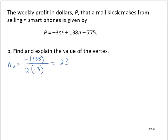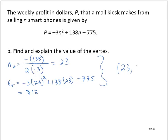Now finding the P coordinate of the vertex by substituting 23 into the equation, into the model. I'd have negative 3 by 23 squared plus 138 by 23 minus 775, and going through the arithmetic, I'm using a calculator here, and I get 812. So then the vertex is 23, 812.